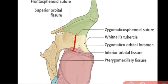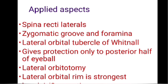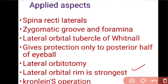Palpation of retrobulbar tumors is easier from the lateral side. Lateral orbital surgeries are more popular because there are no major vessels in the lateral orbital wall, resulting in less bleeding. In the Kronlein operation, the zygomatico-sphenoidal suture is an important landmark for creating flaps. The lateral orbital wall is the strongest wall and must be sawed open for lateral orbitotomies.